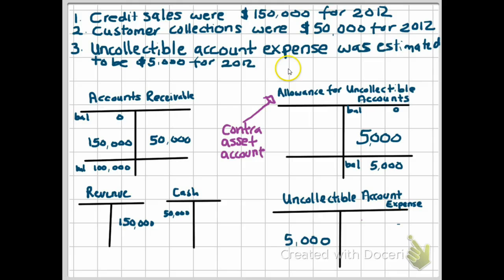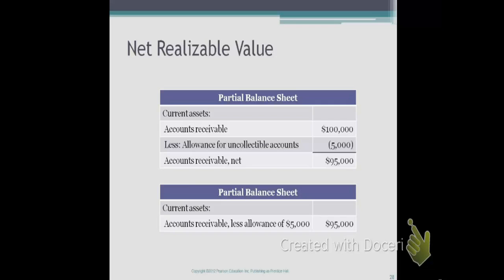Your accounts receivable and allowance account will be shown on your balance sheet. Here are two possible ways: The first method shows accounts receivable of $100,000, less allowance for uncollectible accounts of $5,000, labeled as accounts receivable net of $95,000. The second method shows accounts receivable less allowance of $5,000 equaling $95,000. The $95,000 is called the net realizable value.